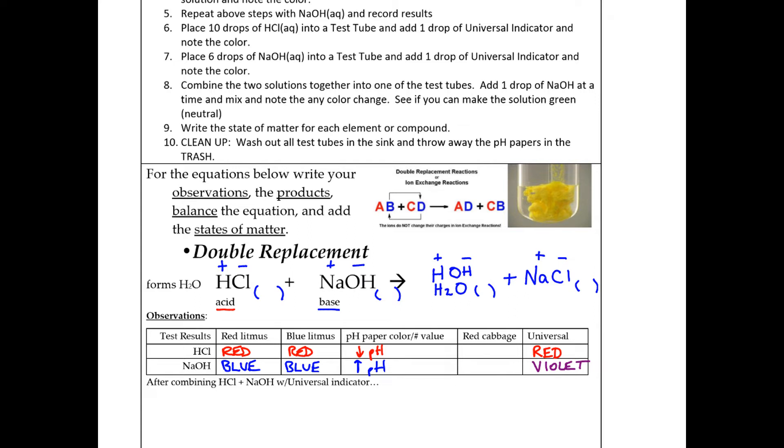So as you started with the HCl, and you added 10 drops of HCl into a test tube, and you had the color of the indicator. And then you took your six drops of the NaOH, and you added your indicator to that and noted the color. Then you put them together. Now when you balance this equation, this is really interesting, when you balance this, it actually comes out to be a one to one to one to one.